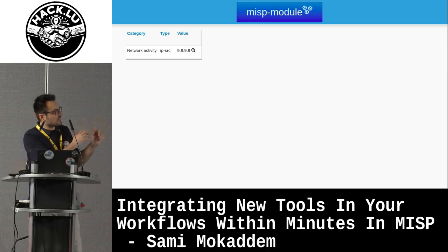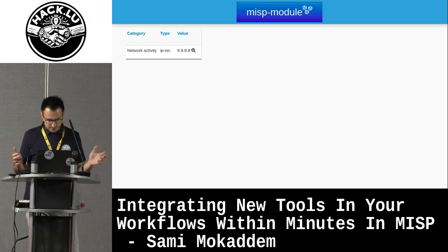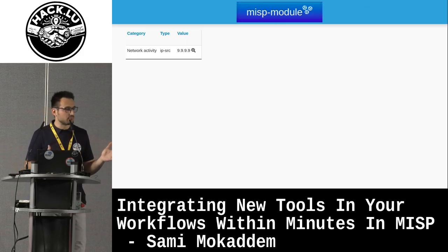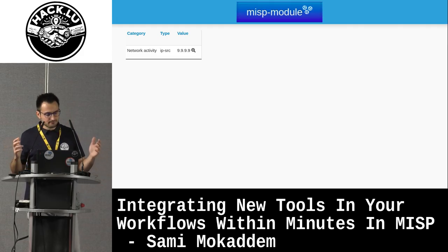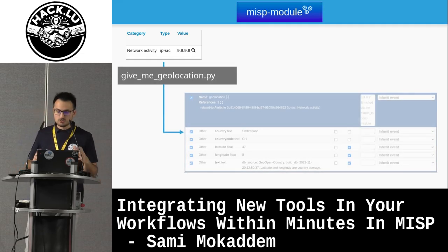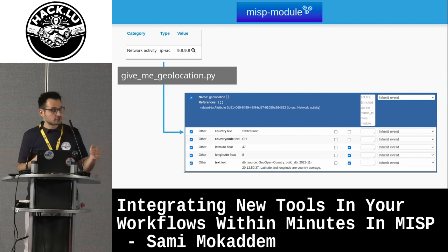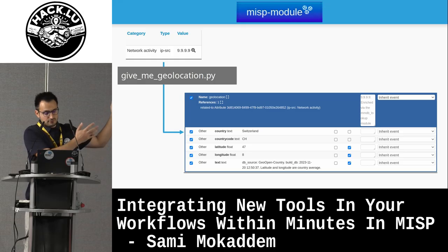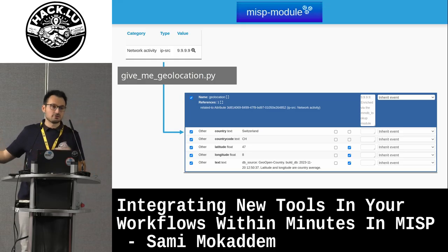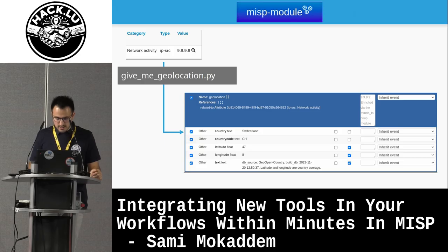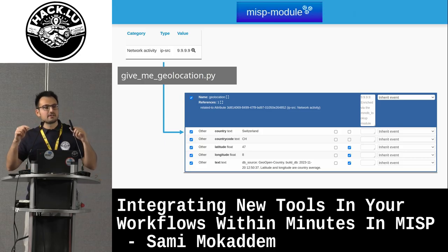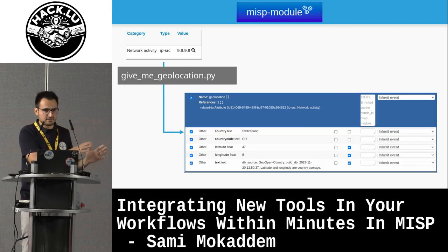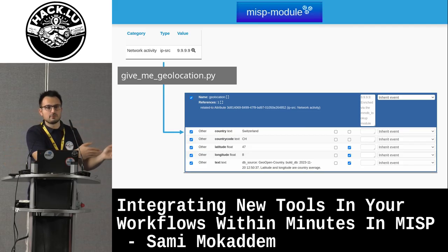Let's have a look at MISP modules. The main usage is to provide an enrichment system to MISP. You basically have a value — like an IP address — and you use the system to get more information about that value. In this case, I'm using the module giveMeGeolocation.py, and from the input IP, I get an output which is the geolocation of that IP address. If I think the information is relevant, I can save it inside MISP to further share with other people.